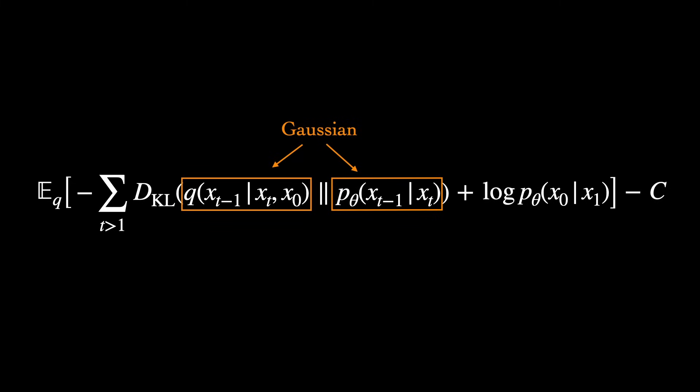This helps reduce variance in the training process, because instead of aiming to reconstruct Monte Carlo samples, the targets for the reverse step become the true posteriors of the forward process, given x0.